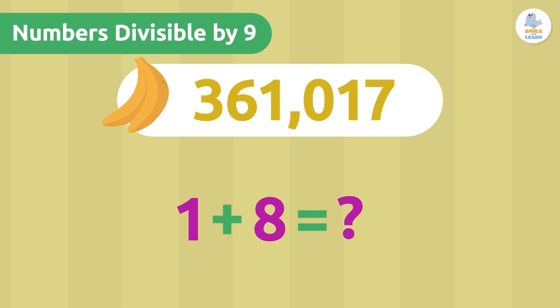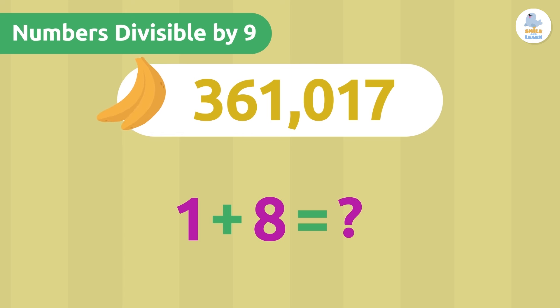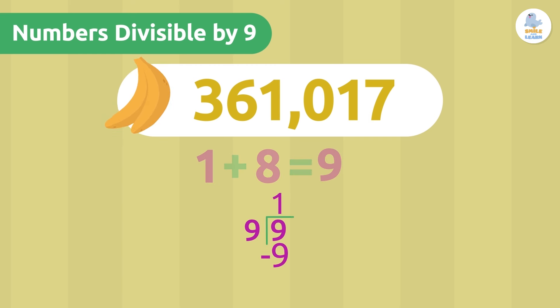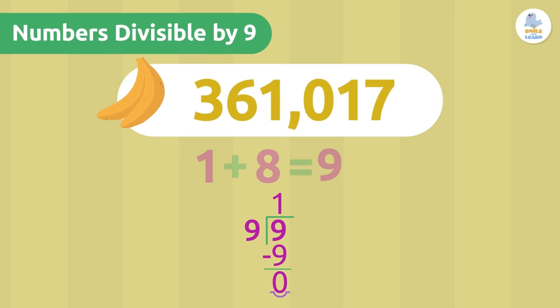The previous sum gave us 18, so 1 plus 8 is 9. A number is always divisible by itself, so 9 is divisible by 9. We've already solved the banana problem!